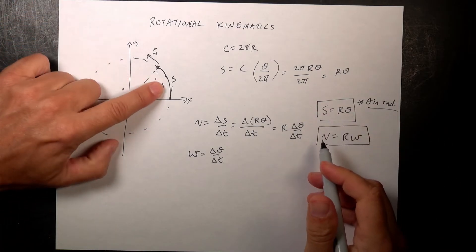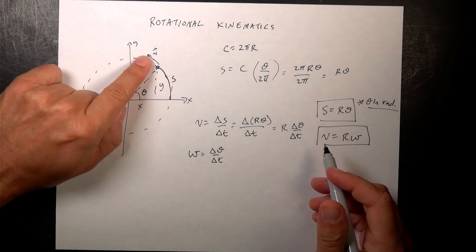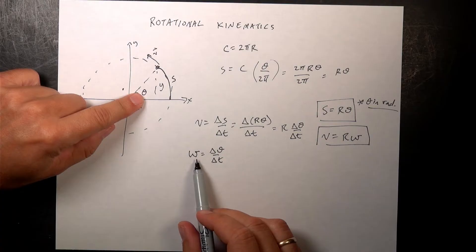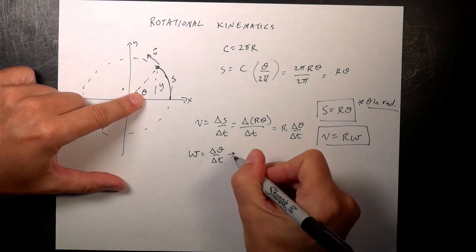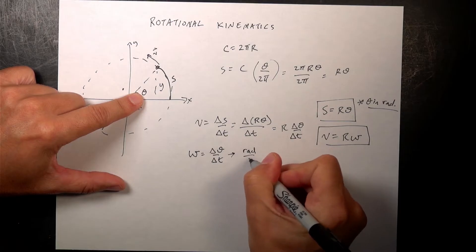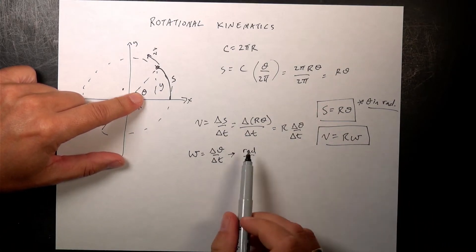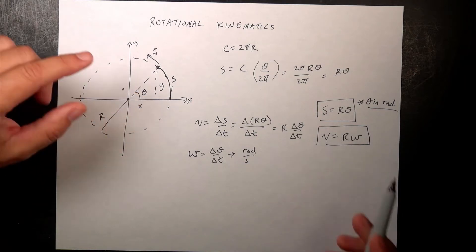So this is a relationship between the speed, not the direction. The speed as it moves along here and the rate that the theta changes. So we call omega the angular velocity. And this equation only works if omega is in radians per second. Well, radians per minute worked too, but you definitely want that in radians. And that's the relationship between angular velocity and linear velocity.